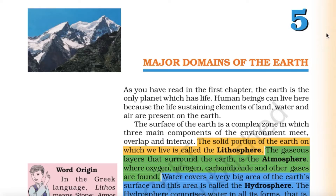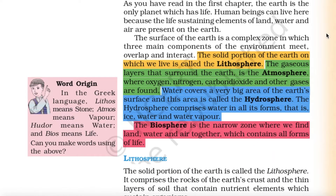Chapter 5: Major Domains of the Earth. As you have read in the first chapter, the earth is the only planet which has life. Human beings can live here because the life-sustaining elements of land, water and air are present on the earth. The surface of the earth is a complex zone in which three main components of environment meet, overlap and interact.